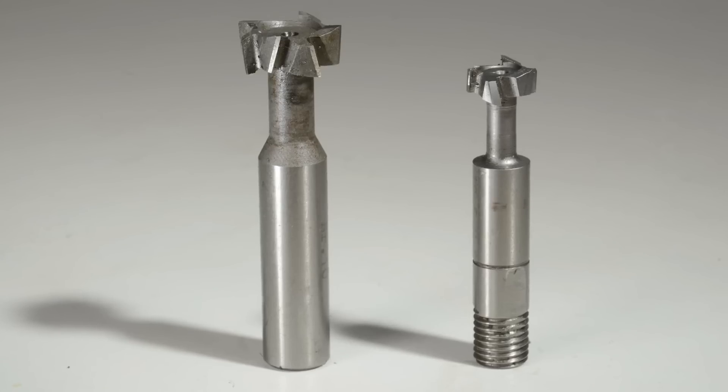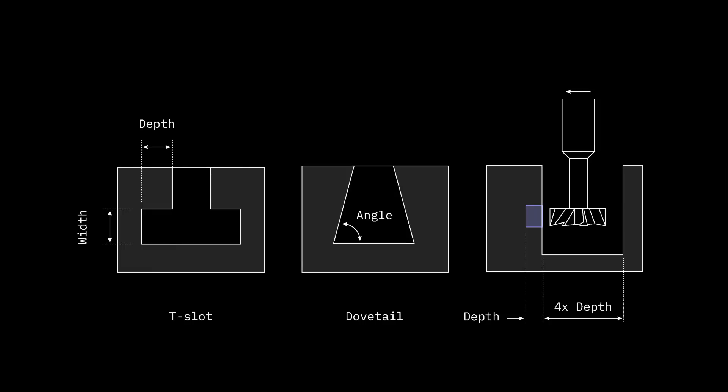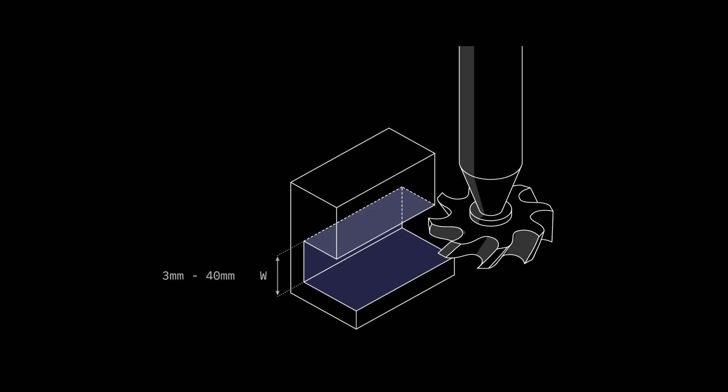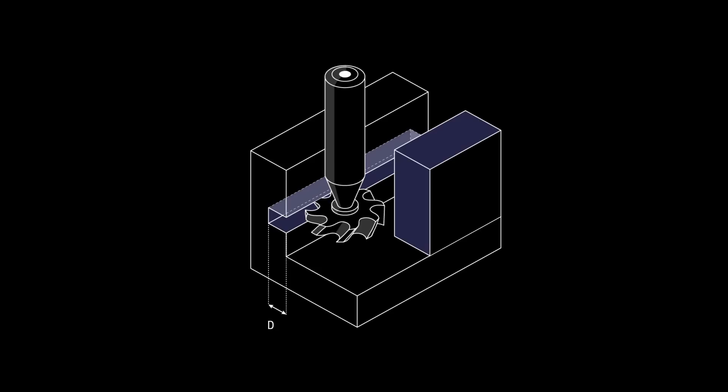Last but not least, designing for undercuts. Undercuts are features that cannot be machined with standard cutting tools — no matter how the part is rotated, the tools cannot reach all surfaces. Therefore, special cutting tools are required: T-shaped, V-shaped, or lollipop-shaped. For undercut width, we recommend 3mm (about 1/8 inch) to 40mm (about 1.5 inches). Maximum depth should not exceed 2 times the width. Design undercuts with whole millimeter increments or standard inch fractions; otherwise custom cutting tools must be created. We recommend a minimum clearance of 4 times the depth of an undercut, and for undercuts on internal faces, add enough clearance between opposing walls to ensure tool access.